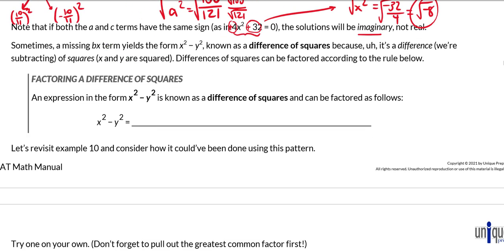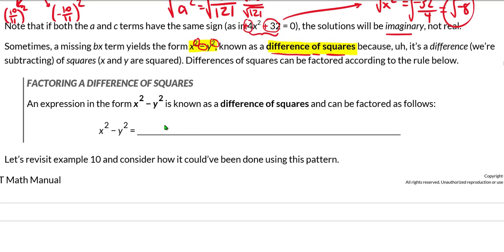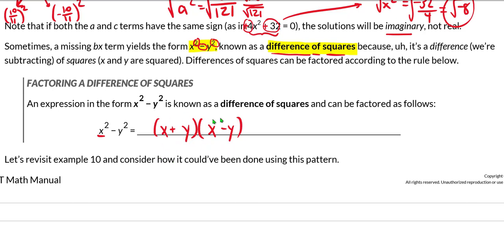Sometimes if you're missing a bx term, you will get the form x squared minus y squared, which is known as a difference of squares. It's called that because you are subtracting two perfect squares, yielding a difference. Almost every one of you should know what a difference of squares factors into — I'd try to factor x squared minus y squared before watching me. A difference of squares always factors into x plus y times x minus y — the square root of the first term, the square root of the second term, one plus and one minus.